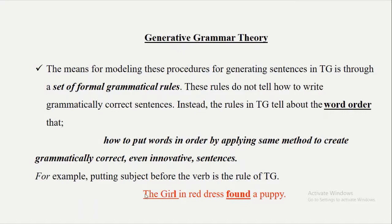Subject must be before the verb — this is the rule of Transformational Generative Grammar. Just by applying this rule, as in 'the girl in the red dress found a puppy,' you can easily generate many more sentences. Simply, the rule is you have to put the subject before the verb. You can easily produce new sentences. This rule is the essence of Transformational Generative Grammar theory.